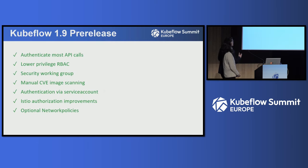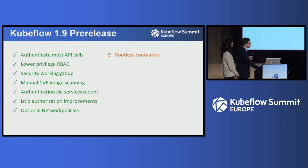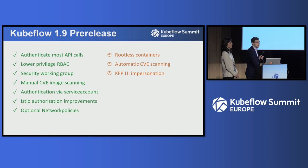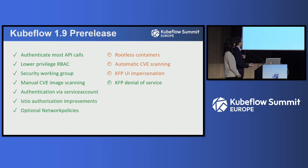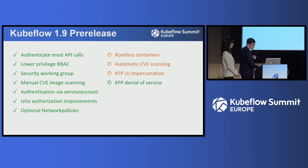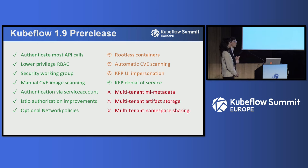As you can see on the left-hand side, we've already achieved quite a lot over the last few releases. On the right-hand side, rootless containers, automatic CVE scanning, and some KFP UI issues are actively being worked on. The KFP denial of service attack is finally solved — this is quite important for large enterprises wanting to scale to tens or hundreds of millions of runs in the KFP database. However, the three major problems regarding multi-tenancy — ML metadata, artifact storage, and namespace sharing — are still pending, and we're looking for volunteers.